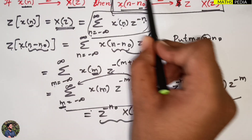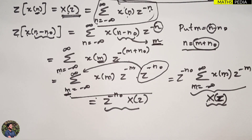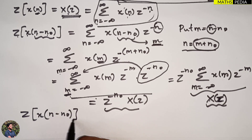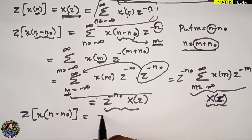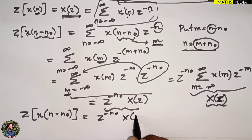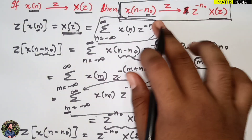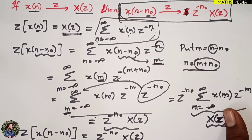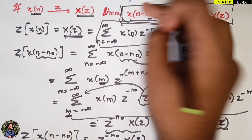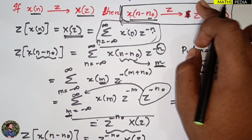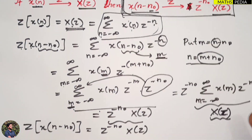So finally, we have proved that the Z-transform of x(n minus n-naught) is equal to z power minus n-naught into X(z). That is what we had to prove, and we have proved it.